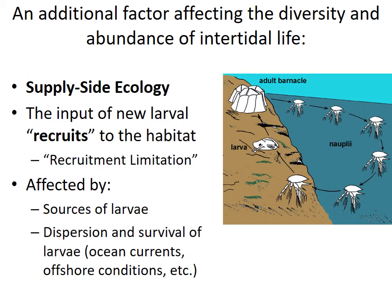We've talked about competition, predation, and physical stresses and how those determine what organisms will be found at what points on a shoreline. Now let's talk about another factor that also has a huge effect on what species will be found along a particular shoreline — what we call supply-side ecology. This factor is the supply of larvae to that habitat.